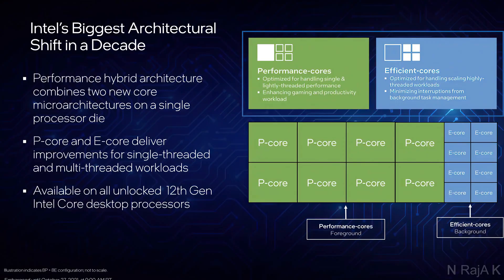Now for more detail on Performance Cores and Efficient Cores. Performance Cores are optimized for handling single and lightly threaded performance, enhancing gaming and productivity workloads. Efficient Cores are optimized for handling and scaling highly threaded workloads, minimizing interruptions from background task management.